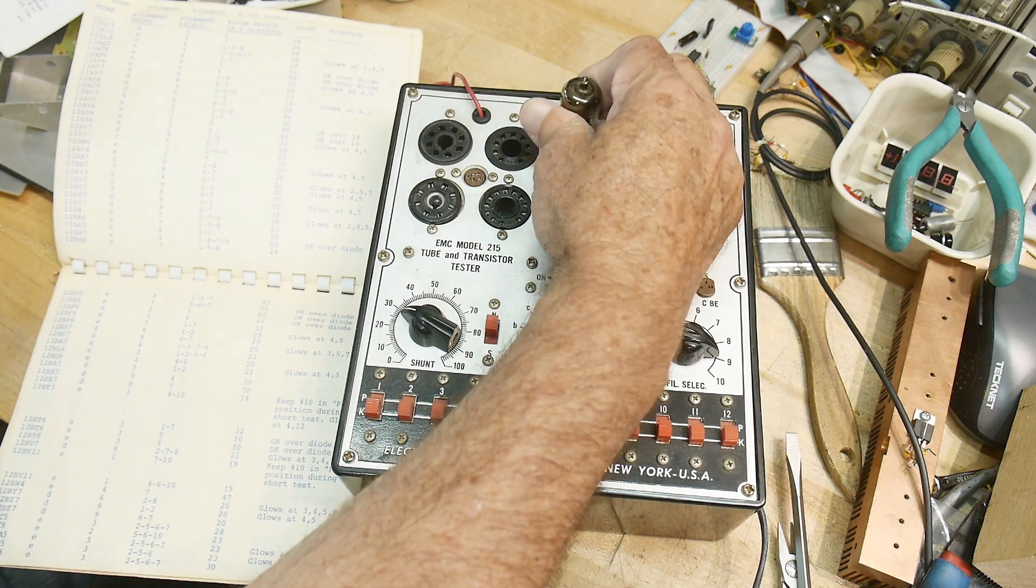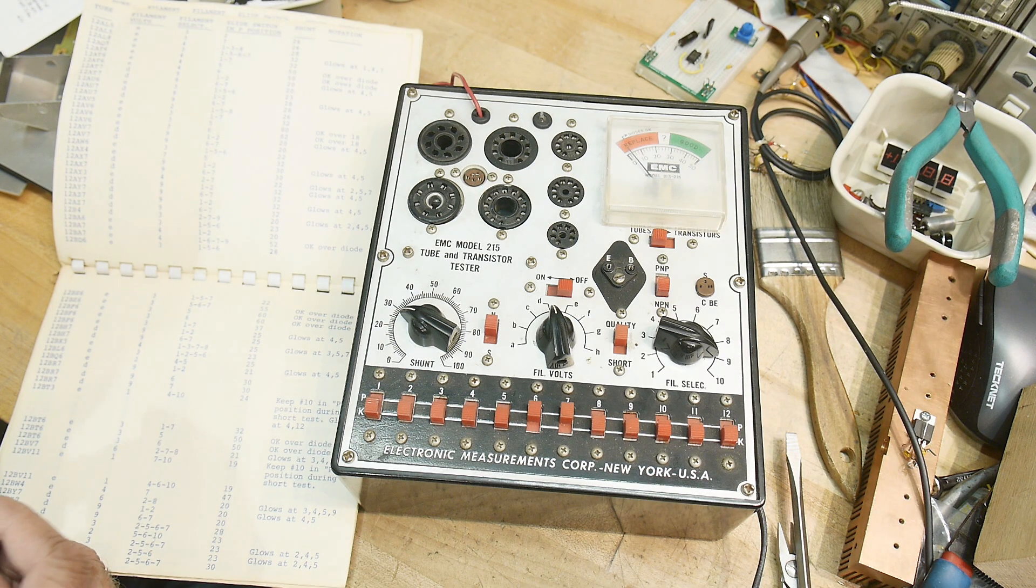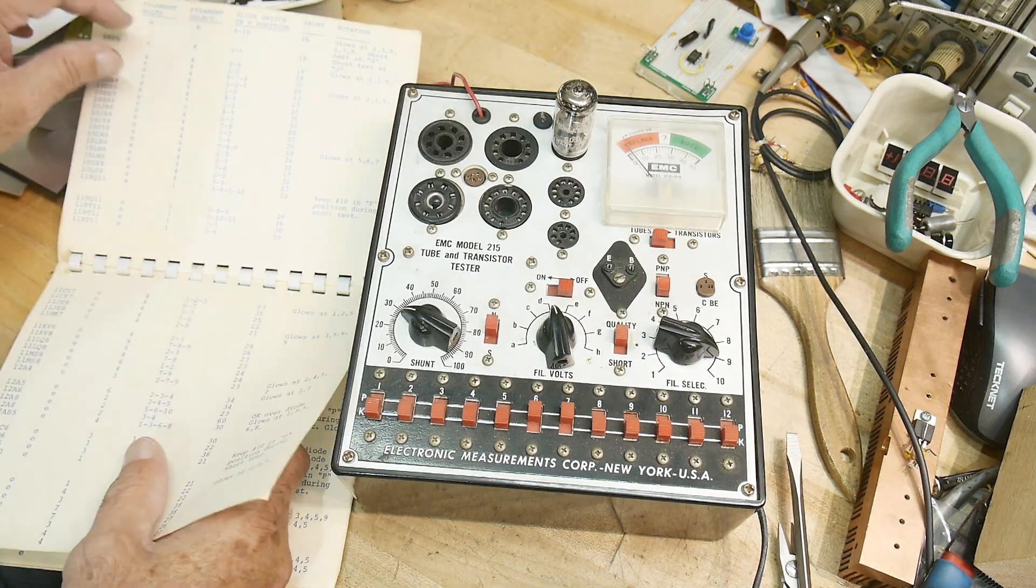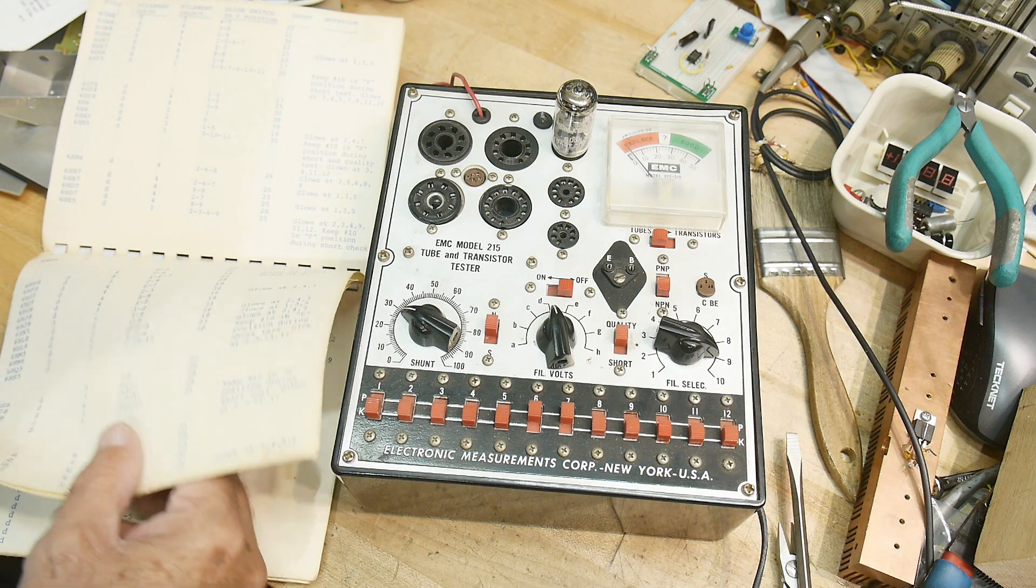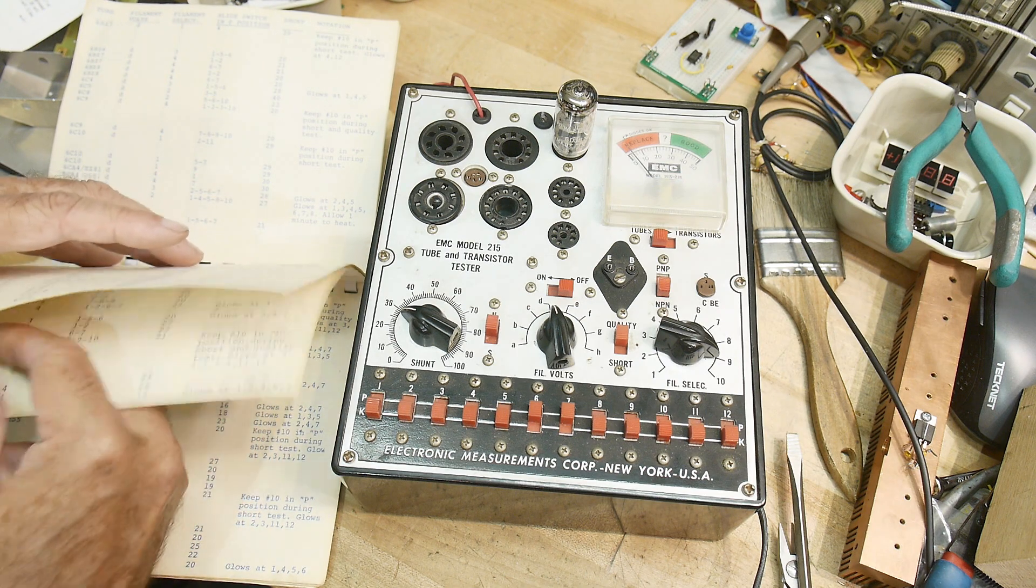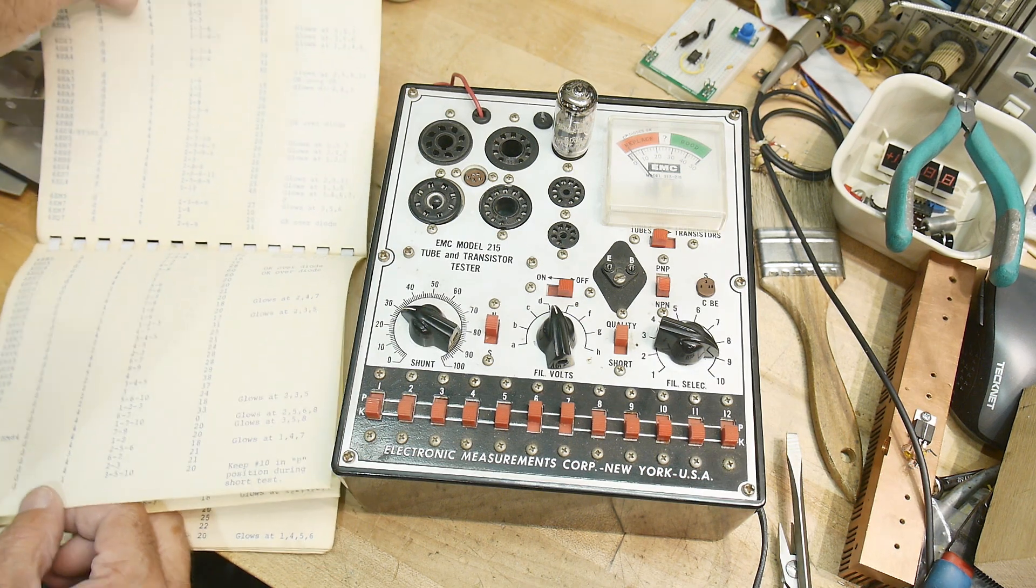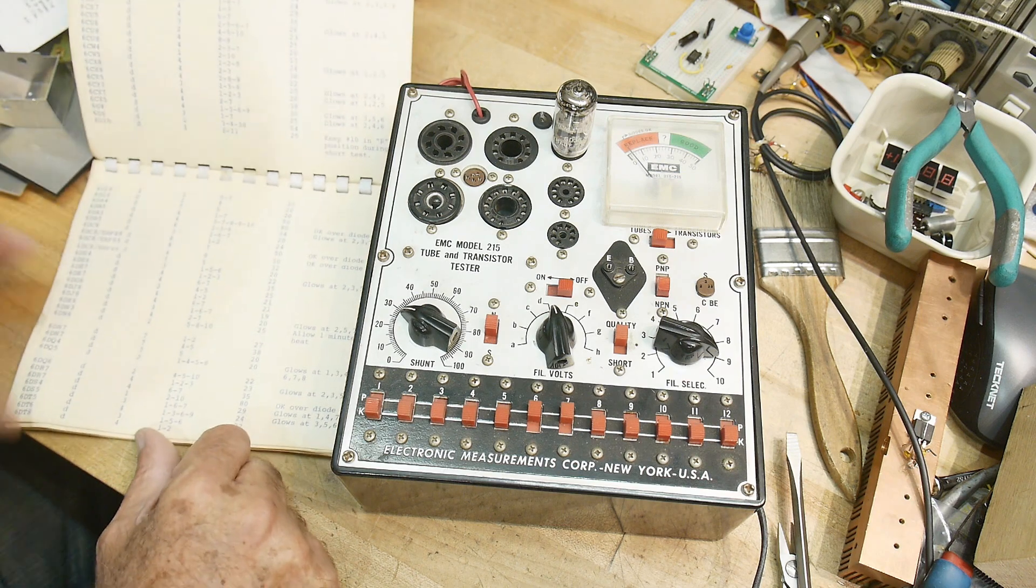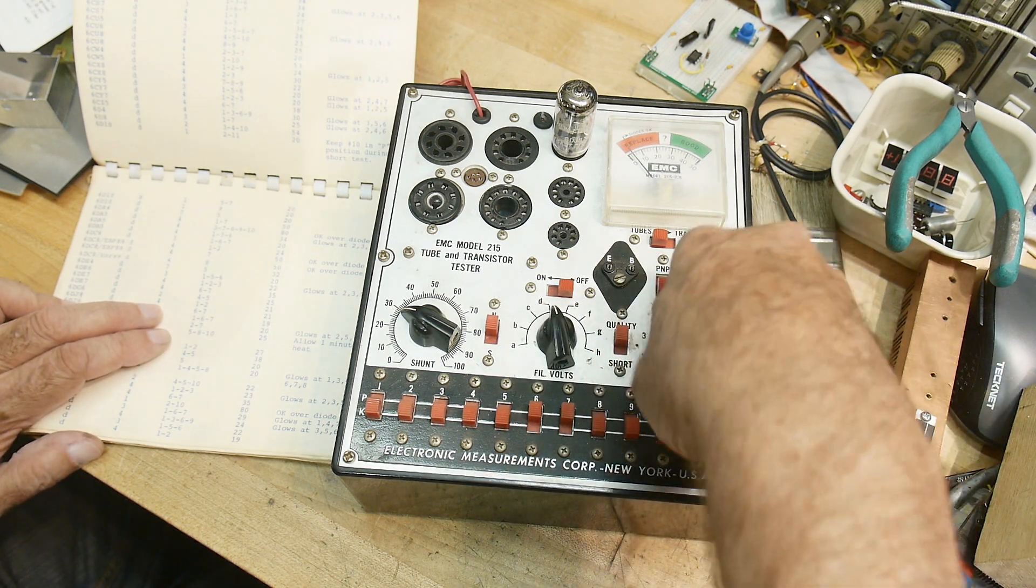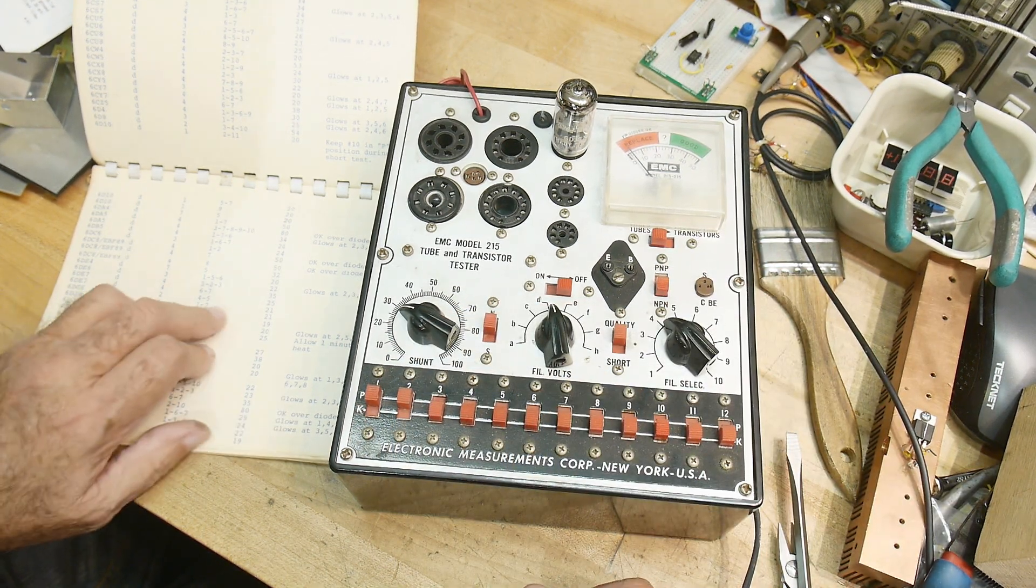All right. And the other tube that I had was a 6DJ8. All right. Six, six, D, six, D, J, next page. All right. Six, D, J, eight.